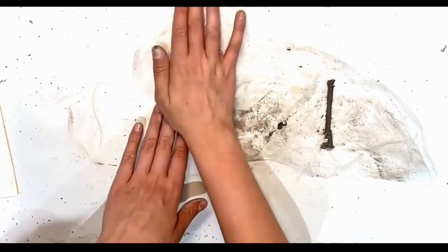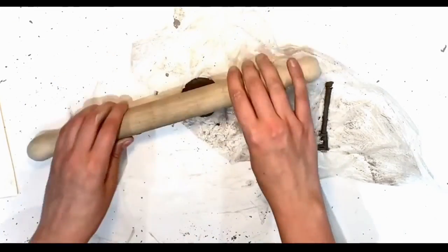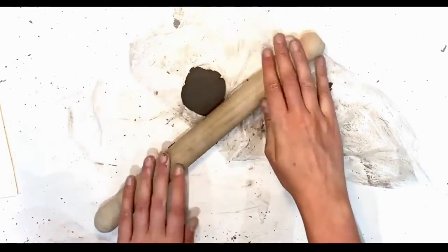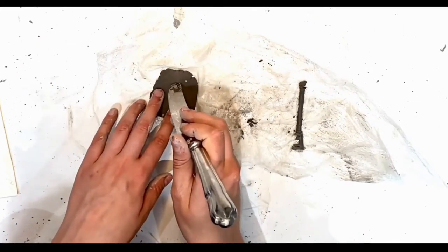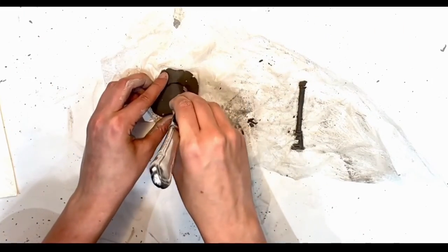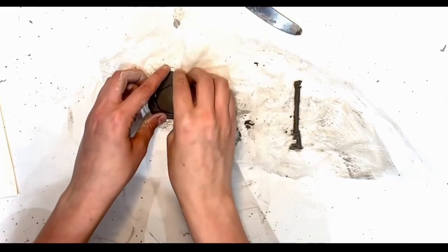Roll out a piece of clay to cut out a circle for the top part of the key. Once you've cut out the circle, you can roll it on its side to make sure it's all even.